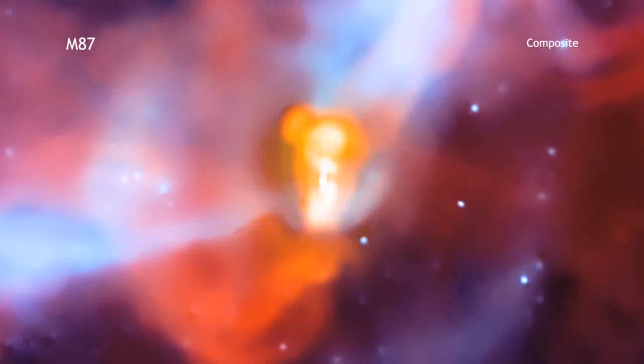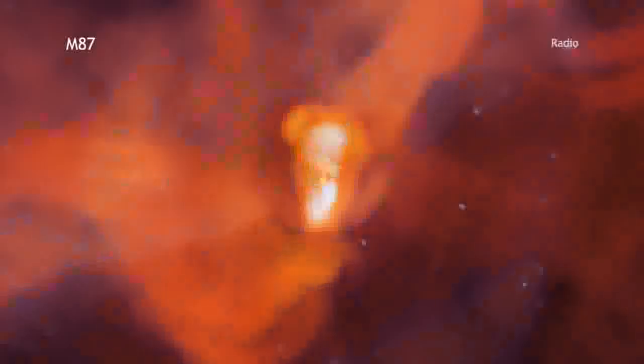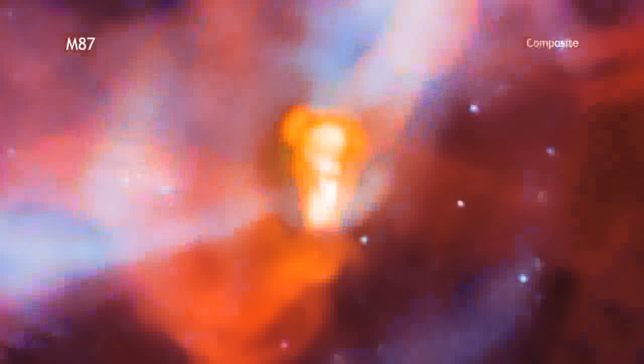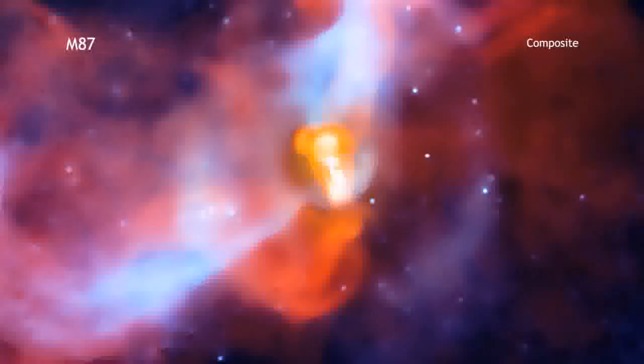This composite image from NASA's Chandra X-ray Observatory, with radio data from the Very Large Array, shows a cosmic volcano being driven by a black hole in the center of the M87 galaxy.